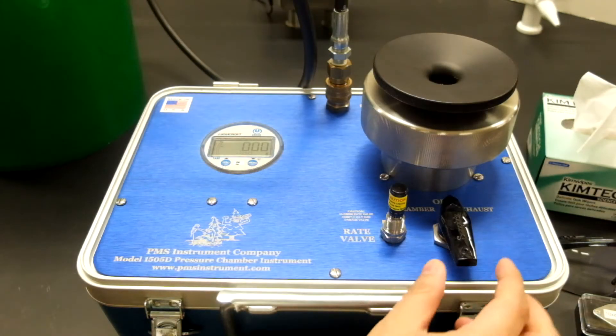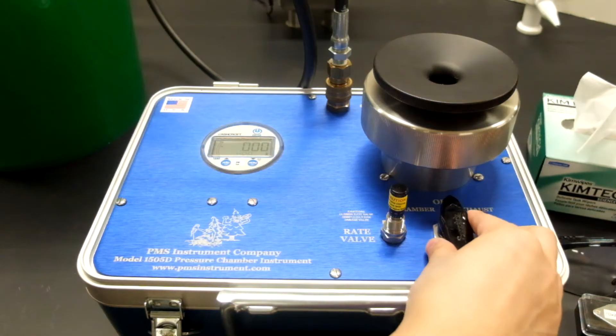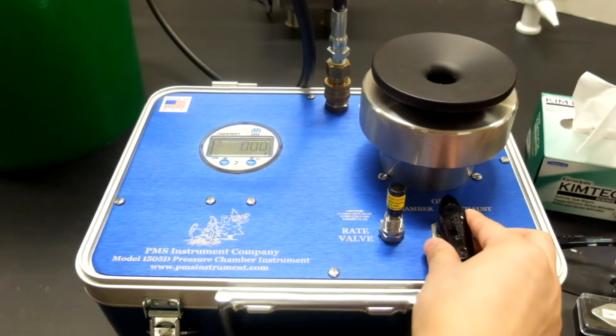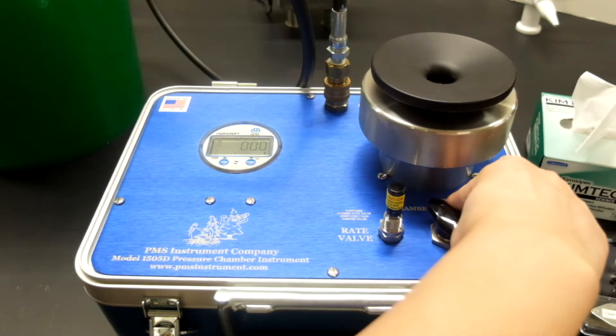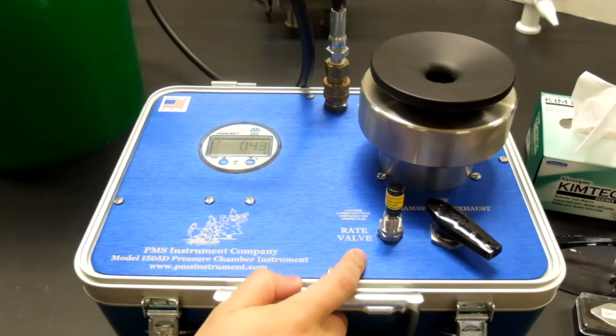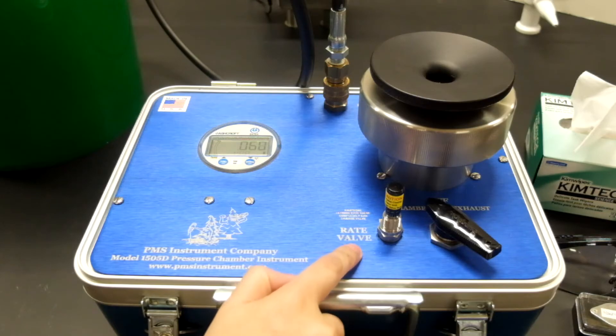To begin measurement we will then turn the valve on the right into the chamber position. Upon this nitrogen gas will fill the chamber. We can adjust the rate of the nitrogen to the chamber by adjusting the rate valve if needed.